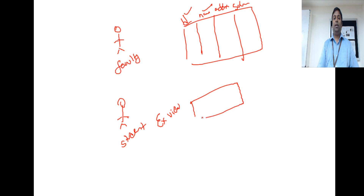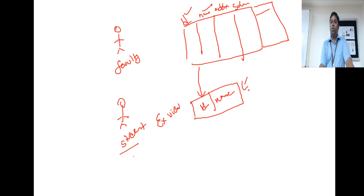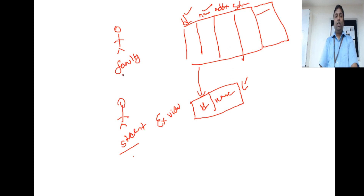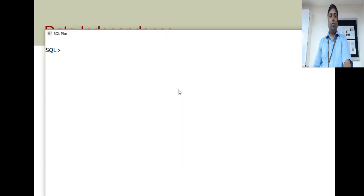This external view is directly projected from the existing table. If I go and add another column — say a department ID column — there is no need to go and change this external view. That means there is logical data independence between these two levels. So, we will create this. We will call this user Satish, create the faculty table, create another user, and give that user access to view only specific data.